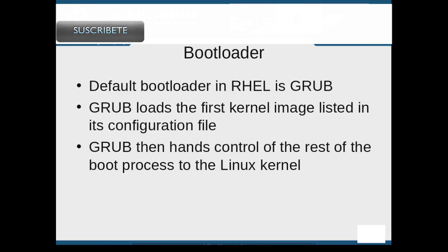The default bootloader program for Red Hat Enterprise Linux is GRUB, the Grand Unified Bootloader. After GRUB starts, it searches its configuration file for the kernel that is listed as its default boot image. GRUB then hands control of the system bootup over to this kernel.